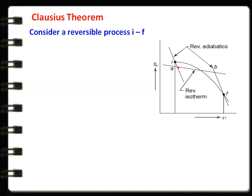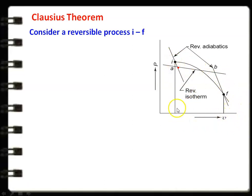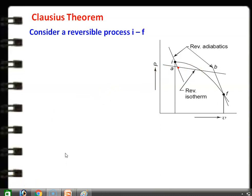We now discuss the Clausius theorem. For its derivation, we consider a reversible process I-F — a curved line — plotted on a PV diagram. Through point I, we draw one reversible adiabatic line, and through point F, we draw another reversible adiabatic line. We then draw a line A-B such that the area under the line A-B is equal to the area under the curve I-F.